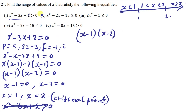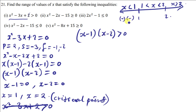Using the expression (x minus 1)(x minus 2) greater than zero, I'll get any number less than 1 — say zero. Zero minus 1 gives negative 1 (negative), and zero minus 2 gives negative 2 (negative). Negative times negative gives positive. Is a positive number greater than zero? Yes — meaning this region is one of the ranges of values of x we're looking for.